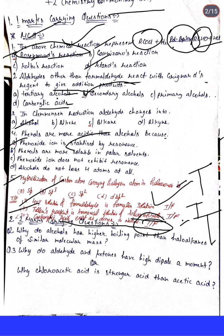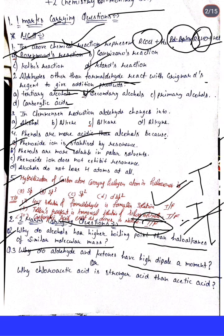Next are the two-mark carrying questions. Question 1: Why do alcohols have a higher boiling point than haloalkanes of similar molecular masses? Question 2: Why do aldehydes and ketones have a high dipole moment? There is also an option question: why is chloroacetic acid stronger than acetic acid?